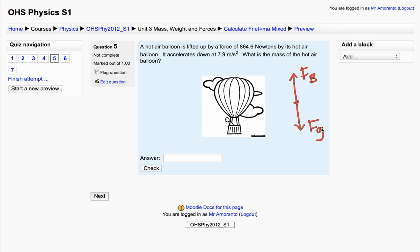Interacting between these two, the F_net equation would look like this: F_net equals force of the balloon, since that's positive, minus the force of gravity equals mass times acceleration.